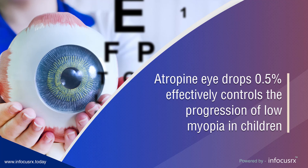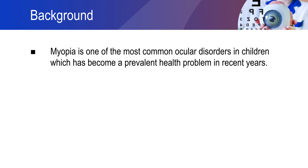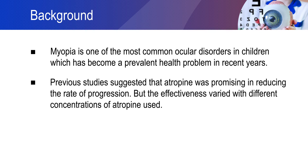Atropine eye drops of 0.5% effectively controls the progression of low myopia in children. Myopia is a common refractive error of the eye, and has become a more prevalent health problem in recent years. A previous study suggested that 0.01% atropine used in the treatment of myopia in children significantly reduced the rate of myopia progression over one year.